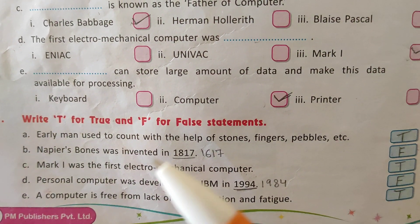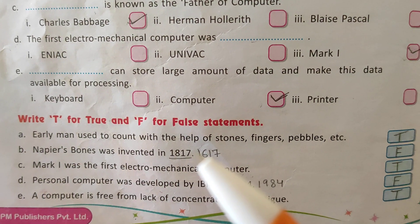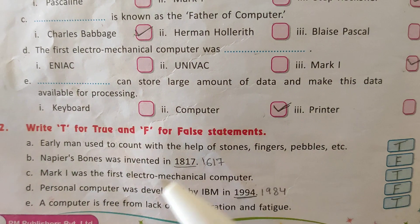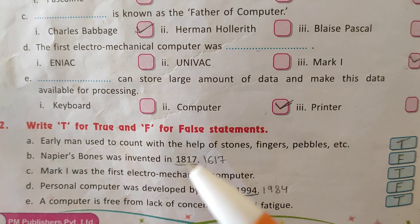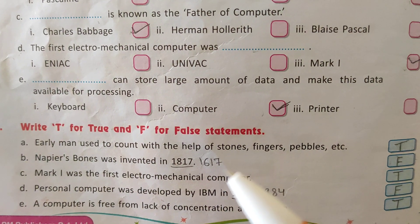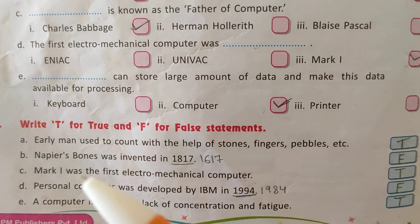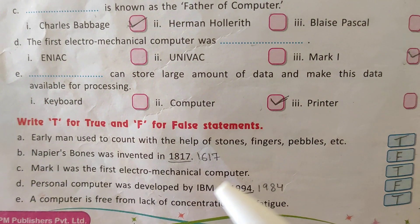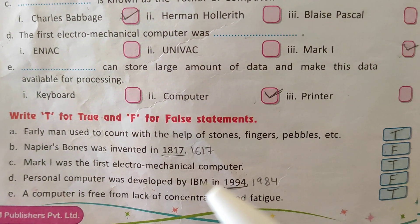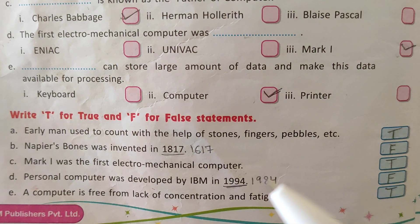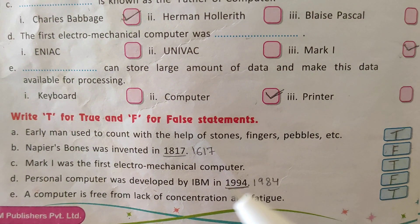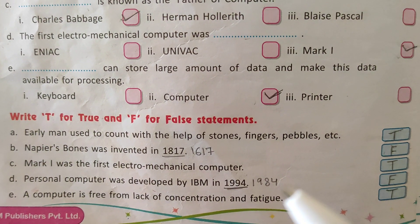Napier's Bones was invented in 1617 — the statement saying 1817 is false. Please correct it: underline 1817 and write down 1617. Mark 1 was the first electromechanical computer — True. Personal computer was developed by IBM in 1994 — this is again false. Underline 1994 and write down 1984.